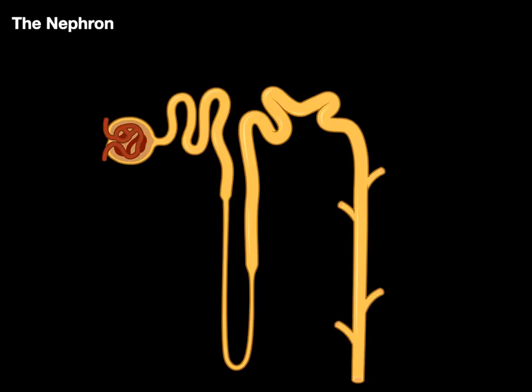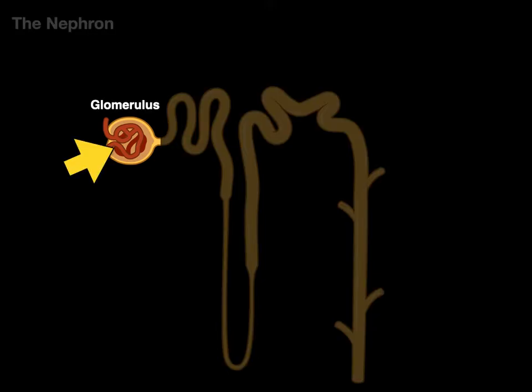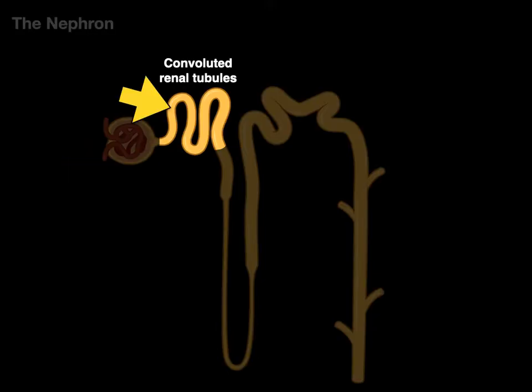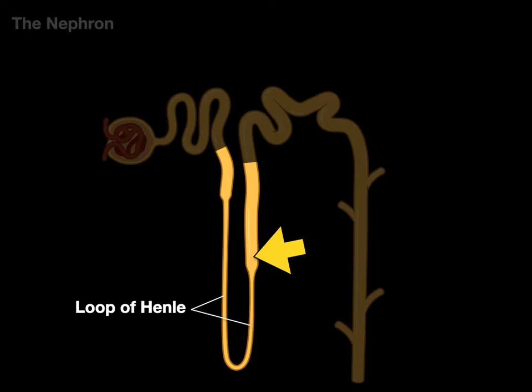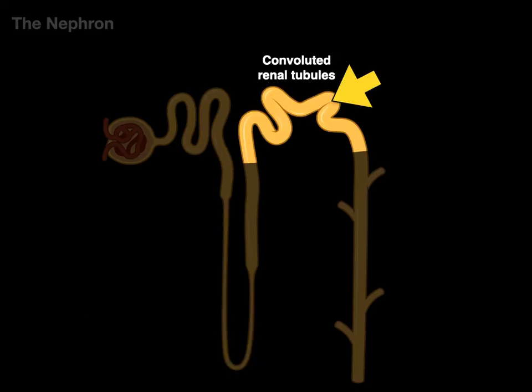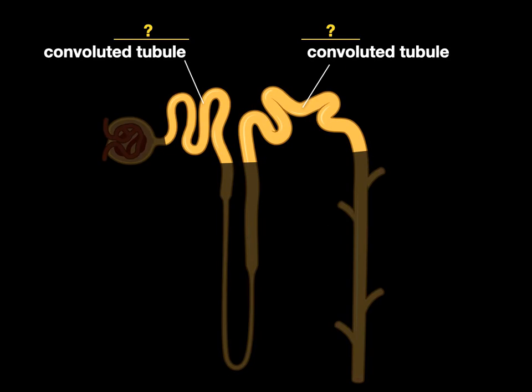Also, if we have any type of tubular organ — in this case the nephron — there's the glomerulus, and here we have convoluted renal tubules. Renal means kidney, and convoluted means they're curly. There's also the loop of Henle and another group of convoluted renal tubules, plus the collecting ducts. Since there are two types of convoluted tubules, this one is called the proximal convoluted tubule because it's closest to the glomerulus where it starts, and the other is called the distal convoluted tubule because it's farther away.